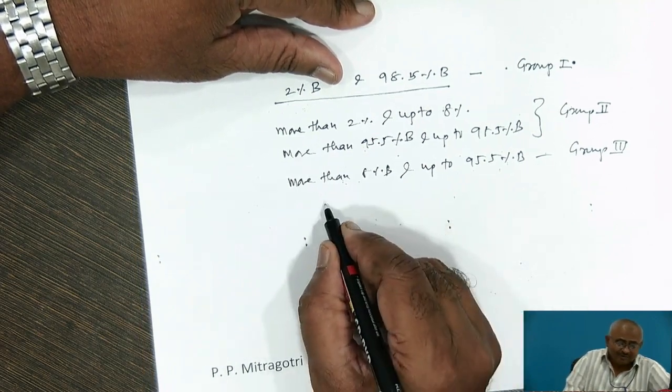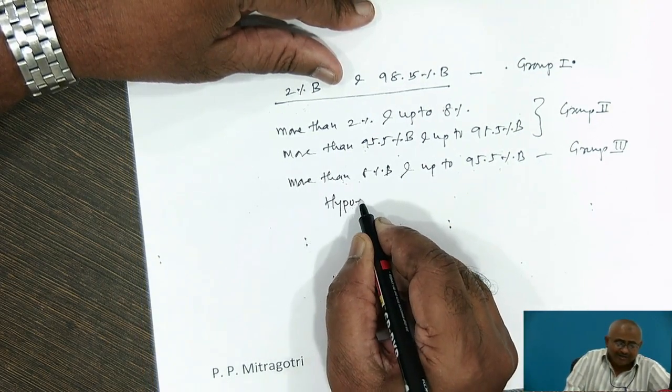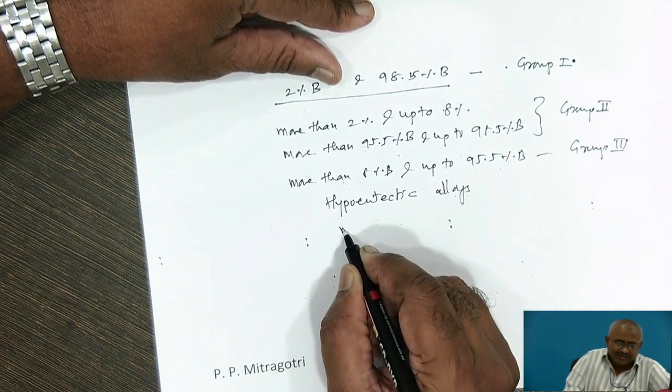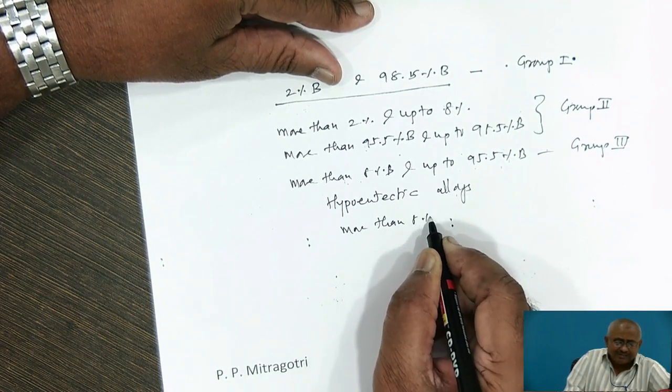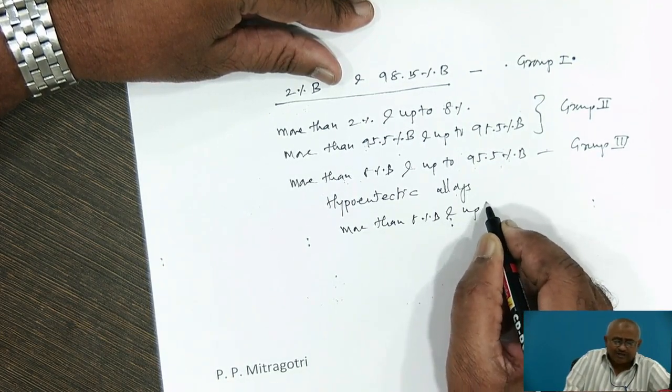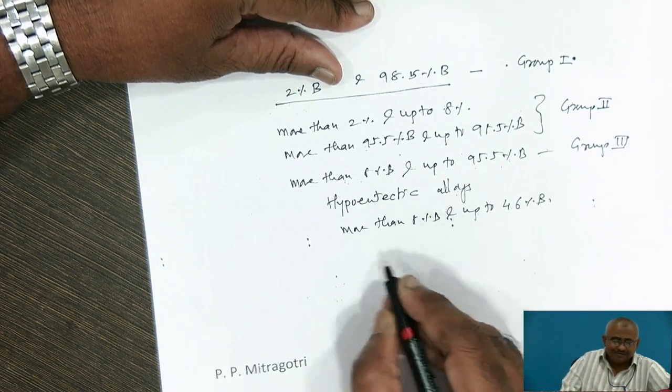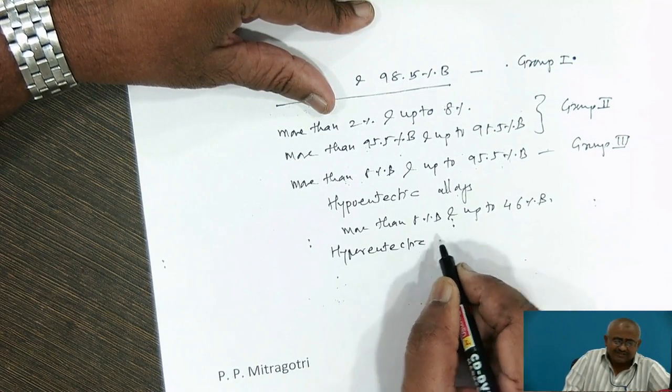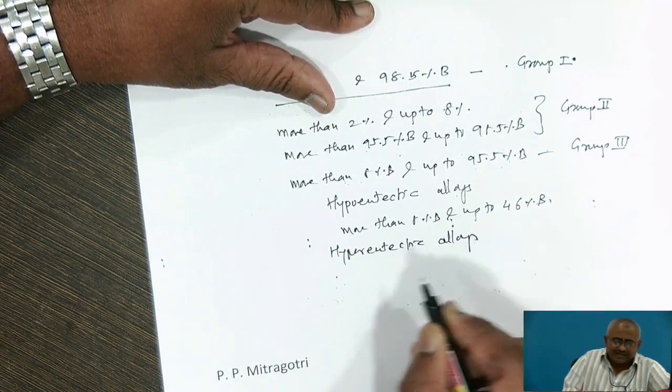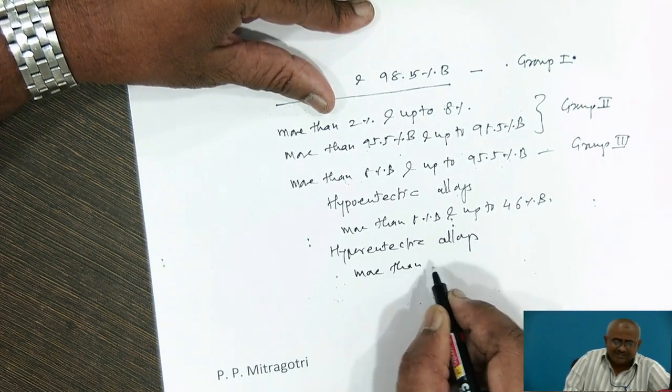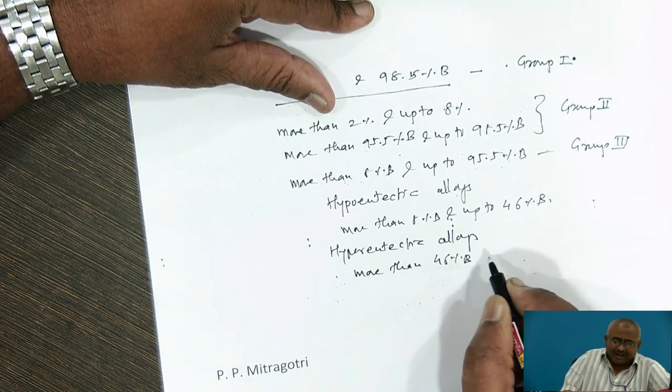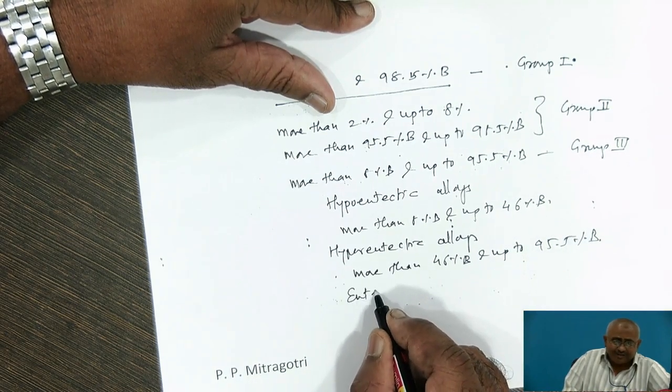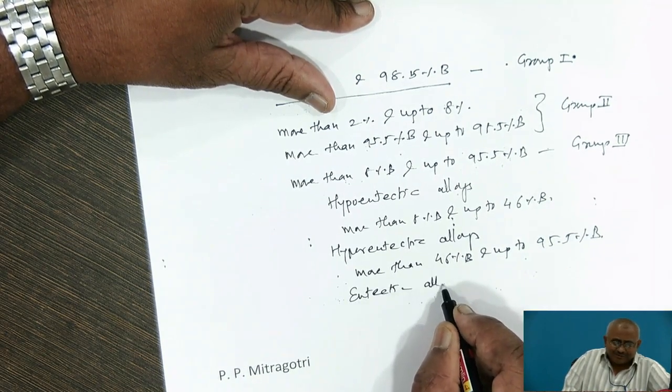In that, there are three types. Hypo-eutectic alloys are the alloys containing more than 8% B and up to 46% B. While hyper-eutectic alloys are the alloys which contain more than 46% B and up to 95.5% B.